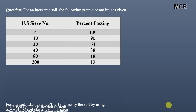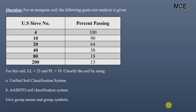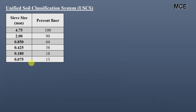Hello and welcome back to Master Civil Engineering. In this video we will learn how to classify a soil using the Unified Soil Classification System and the AASHTO Soil Classification System. I have been given a question which states that for an inorganic soil, the following grain size analysis is given. We can see the sieve number and the corresponding percent passing for each sieve. We have to classify the soil using both systems and give group names and group symbols.